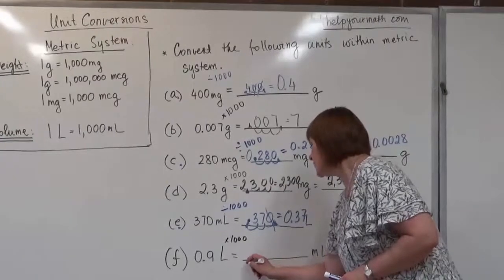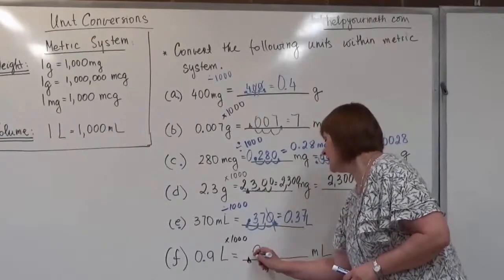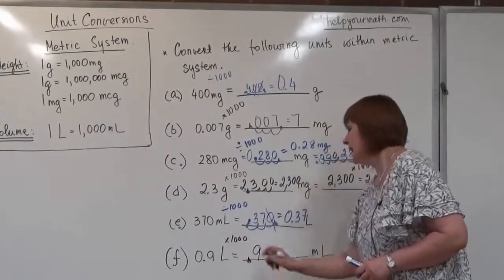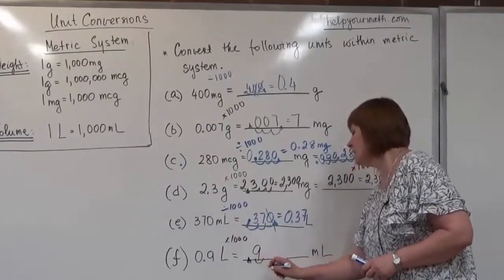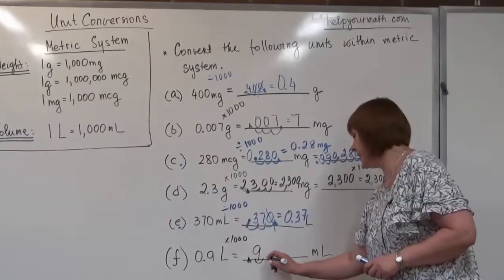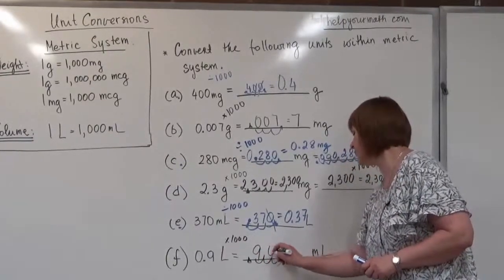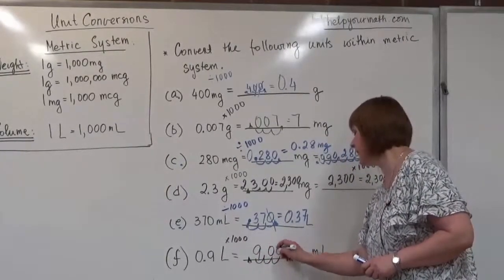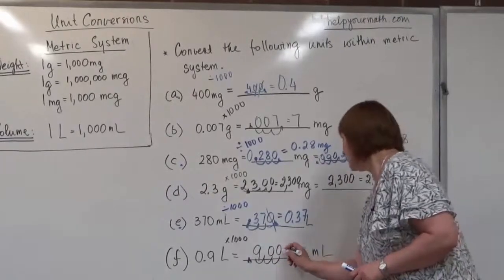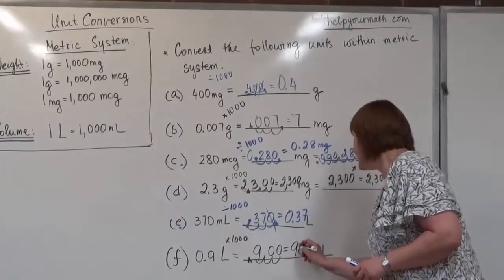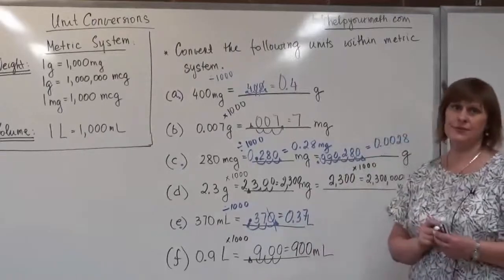We use the old decimal point at nine and count three places: one place for the nine and two extra places filled with zeros. The final answer is 900 milliliters.